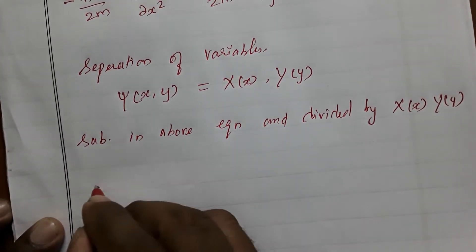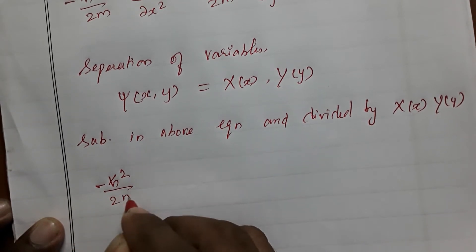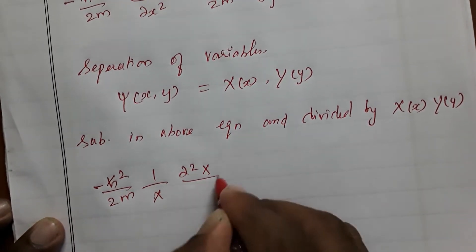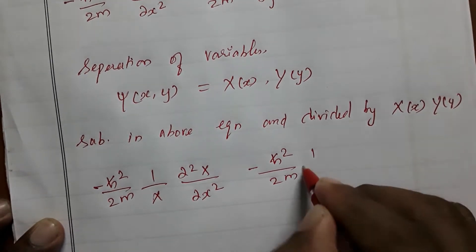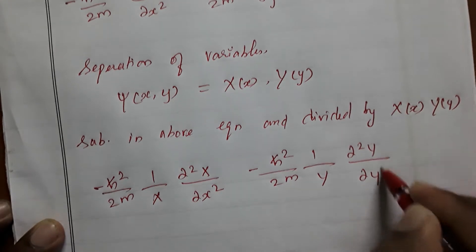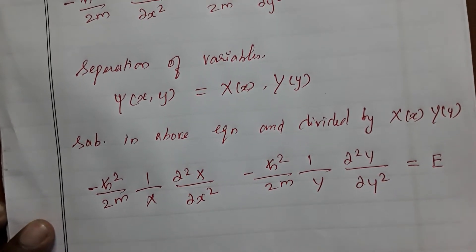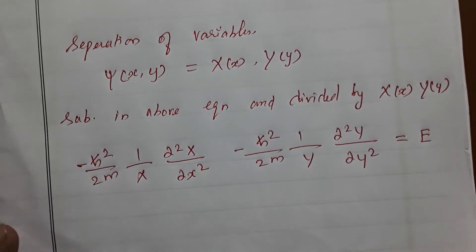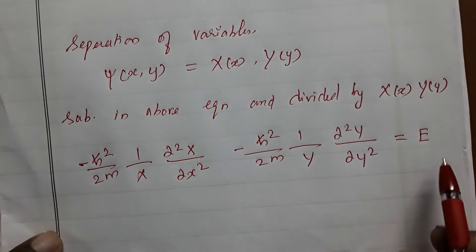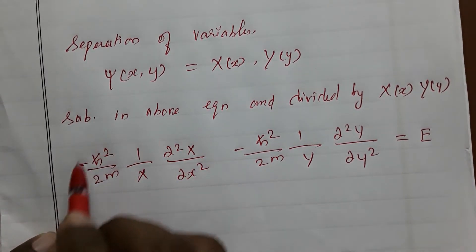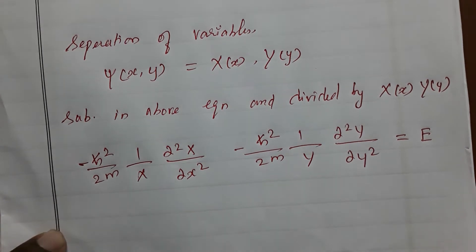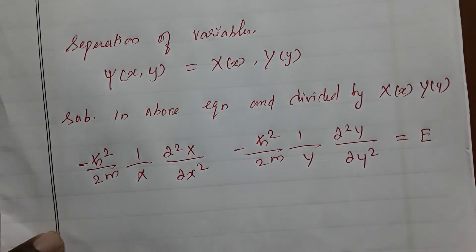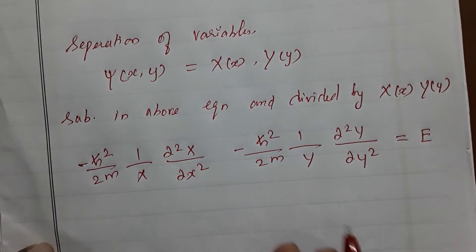The resulting equation is: −(ħ²/2m)(1/X)(d²X/dx²) − (ħ²/2m)(1/Y)(d²Y/dy²) = E. We then separate each variable, setting each part equal to a constant. Since each term depends on only one variable, each acts as an independent one-dimensional box, and we apply the known one-dimensional solution to each.